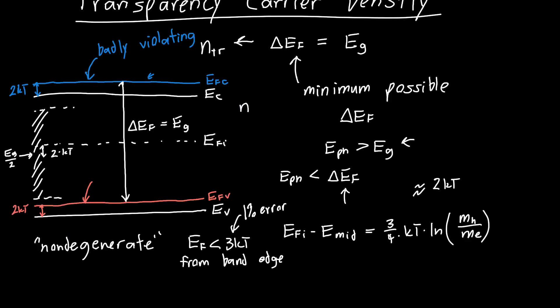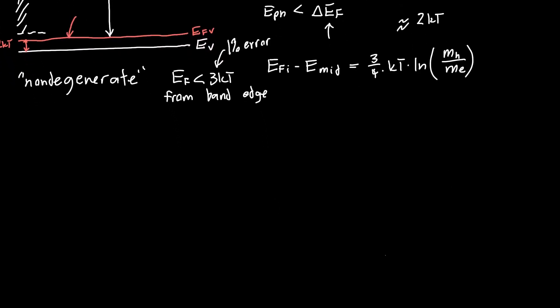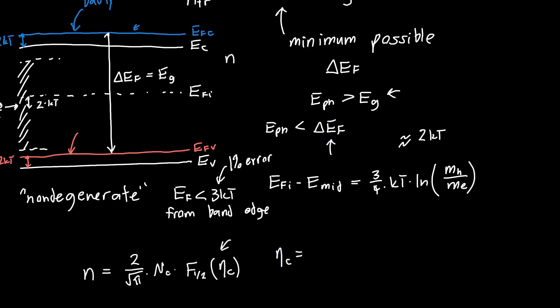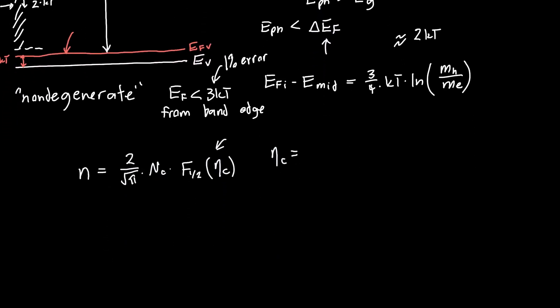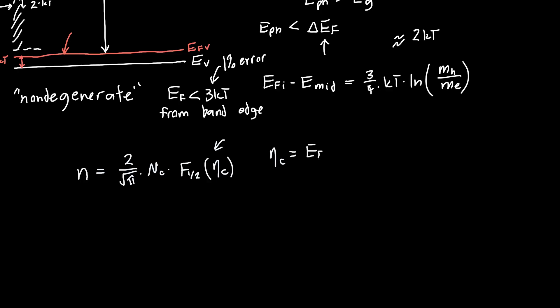One way of doing that we know is always valid is just using the Fermi-Dirac integral. n is just 2 over root pi times nc times our Fermi-Dirac integral of order 1/2. And don't let the long name scare you. It's just a function like any other. This eta-C value was just this distance above the conduction band divided by kT, or EFc minus EC over kT.